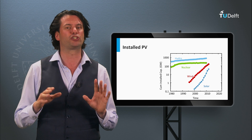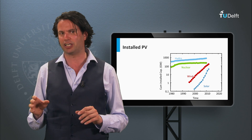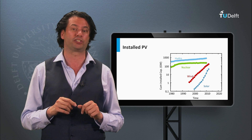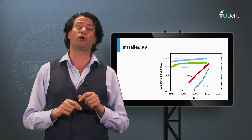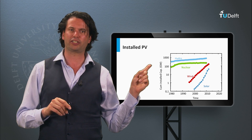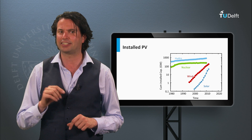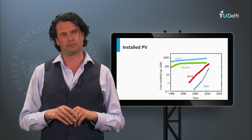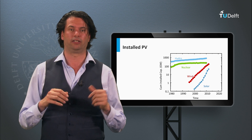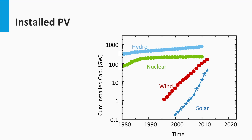Hydropower is responsible for 90% of total worldwide electricity production from non-fossil sources, and nuclear accounts for 16%. To compare these to solar, we look at a figure showing cumulative installed capacity in GW on a logarithmic scale for non-fossil energy sources. Light blue represents hydroelectricity, dark green represents nuclear, red represents wind and dark blue represents solar.